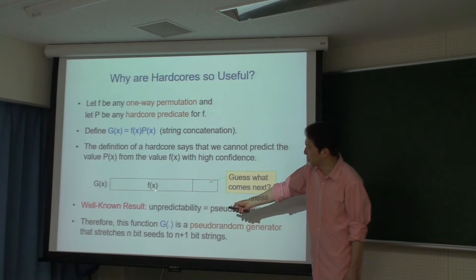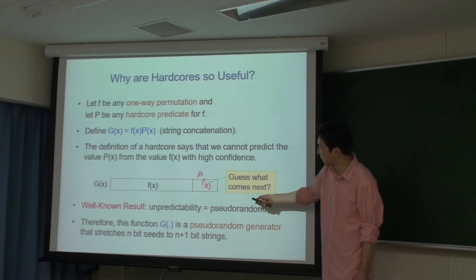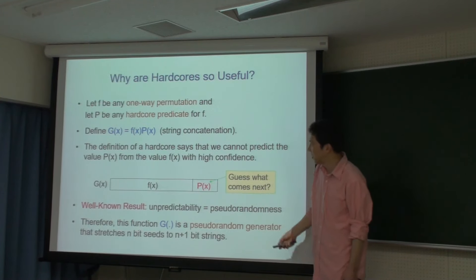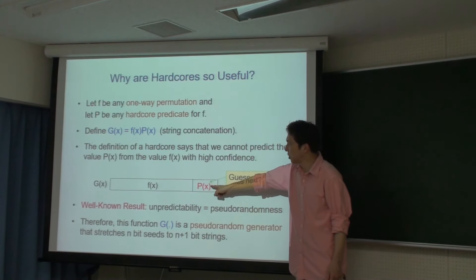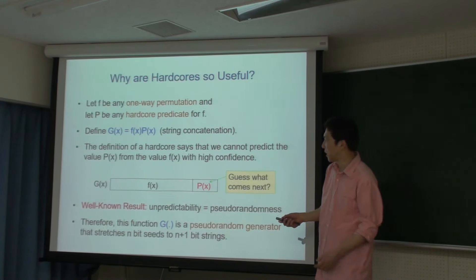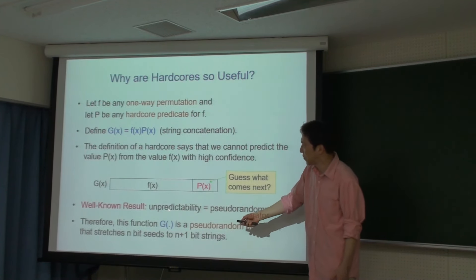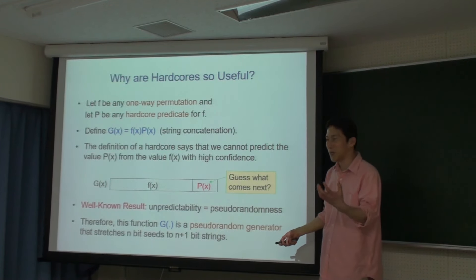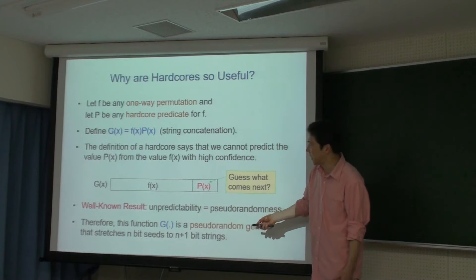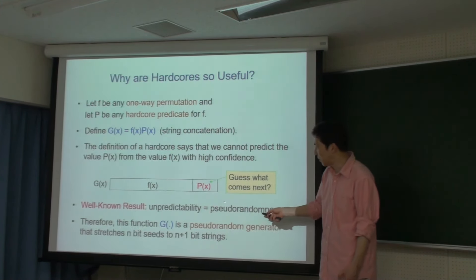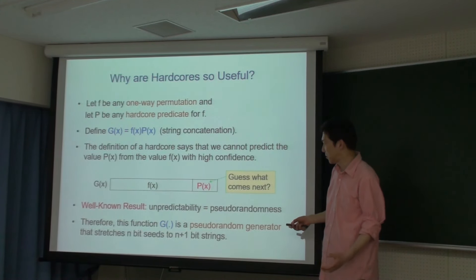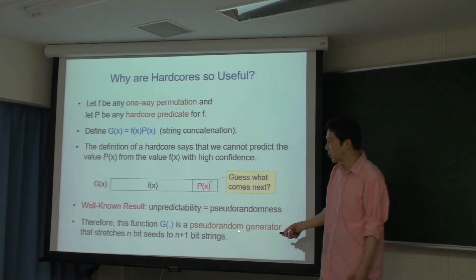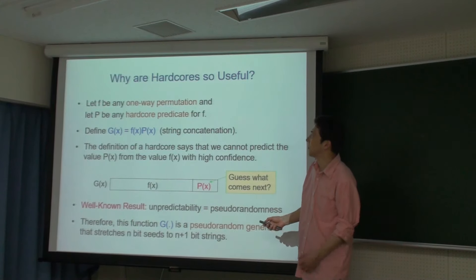なぜこのhardcoreが出てきたかというと、fという関数にhardcoreの01ビット関数bをくっつけたもの、g(x)=f(x)||b(x)という関数を考えると、f(x)の値まで見てきて次のビットb(x)を計算しろというのは次のビットを予想していることになります。それがhardcoreですから難しい。要するに次のビットを見つけるのが難しいということになります。これはunpredictabilityとindistinguishabilityが同値ということに対応しています。